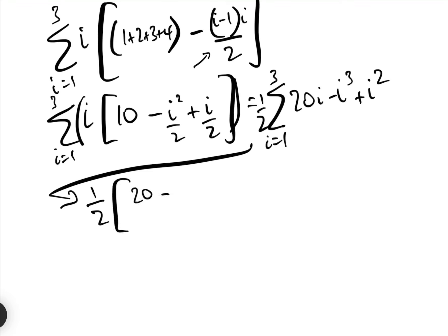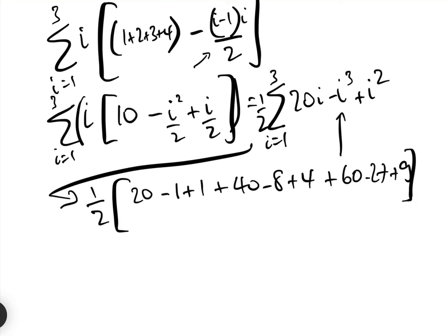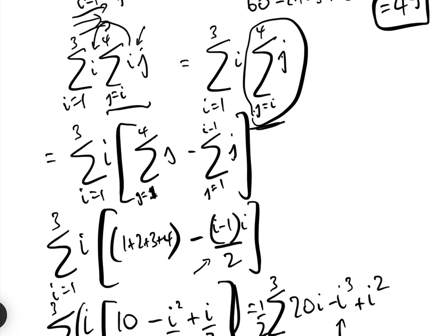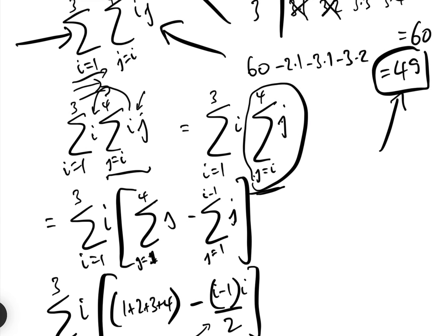So now we can put in i equals 1, i equals 2, and i equals 3, and that gives us a half. When i equals 1: 20 minus 1 plus 1. When i equals 2: 40 minus 8 plus 4. And when i equals 3: 60 minus 27 plus 9. If we add the whole lot up, that gives us 98 over 2, which equals 49. So at least we have the same answer, and this is how we're going to proceed.